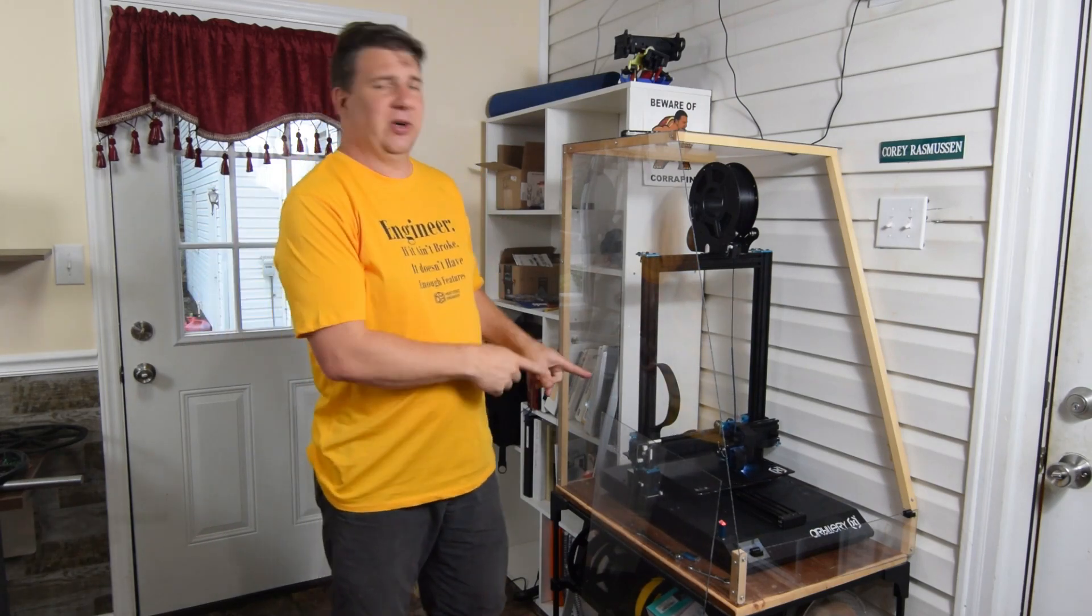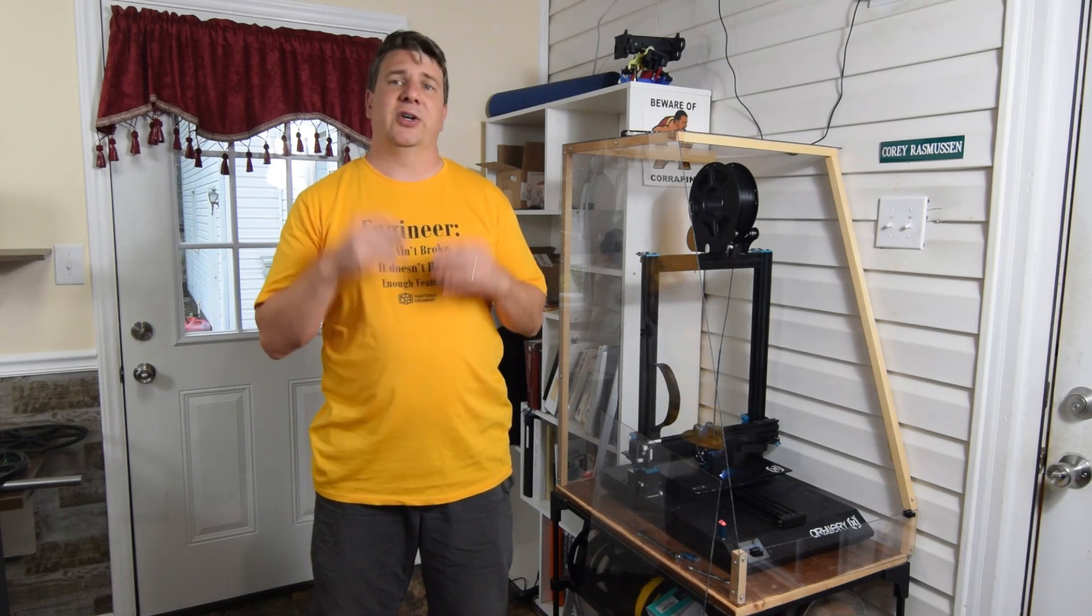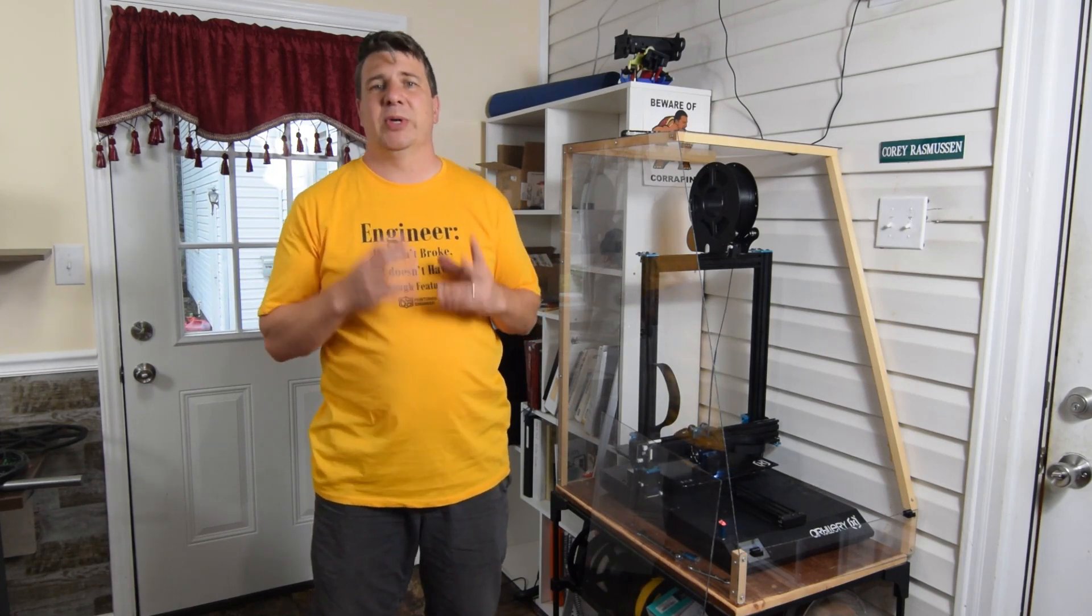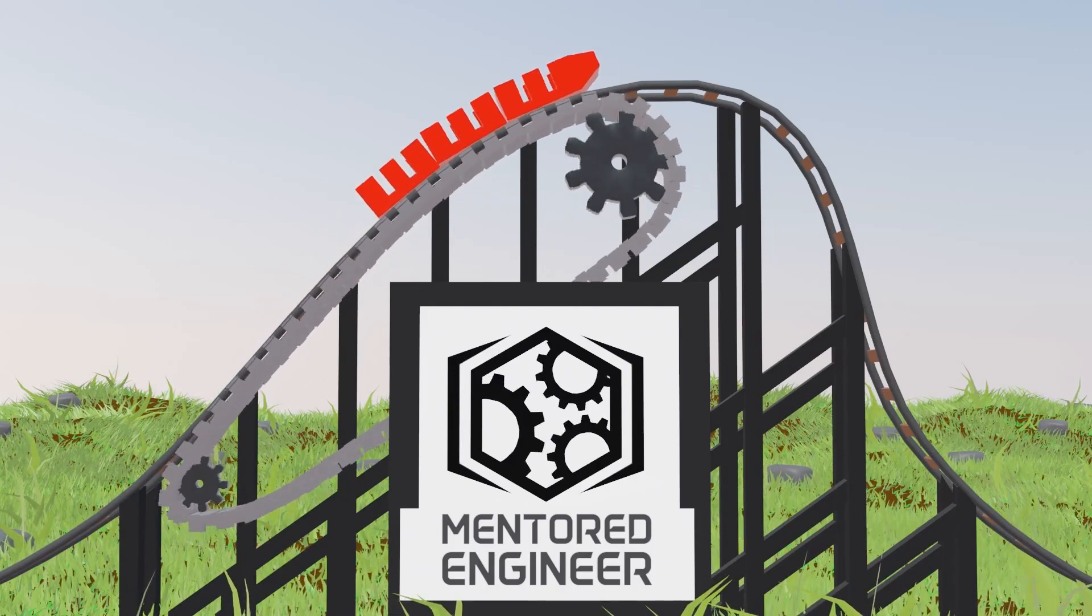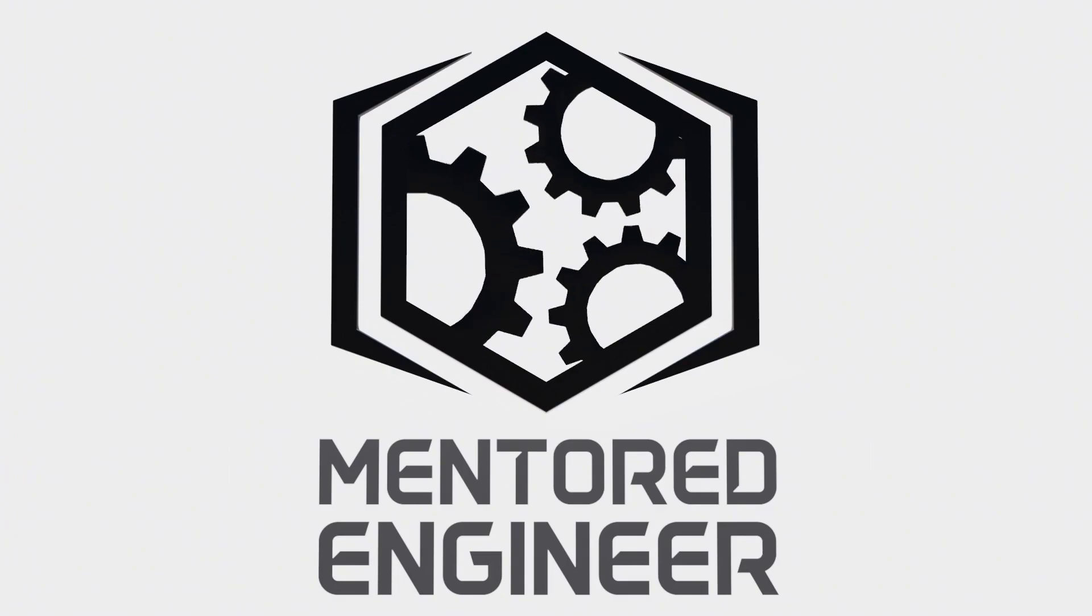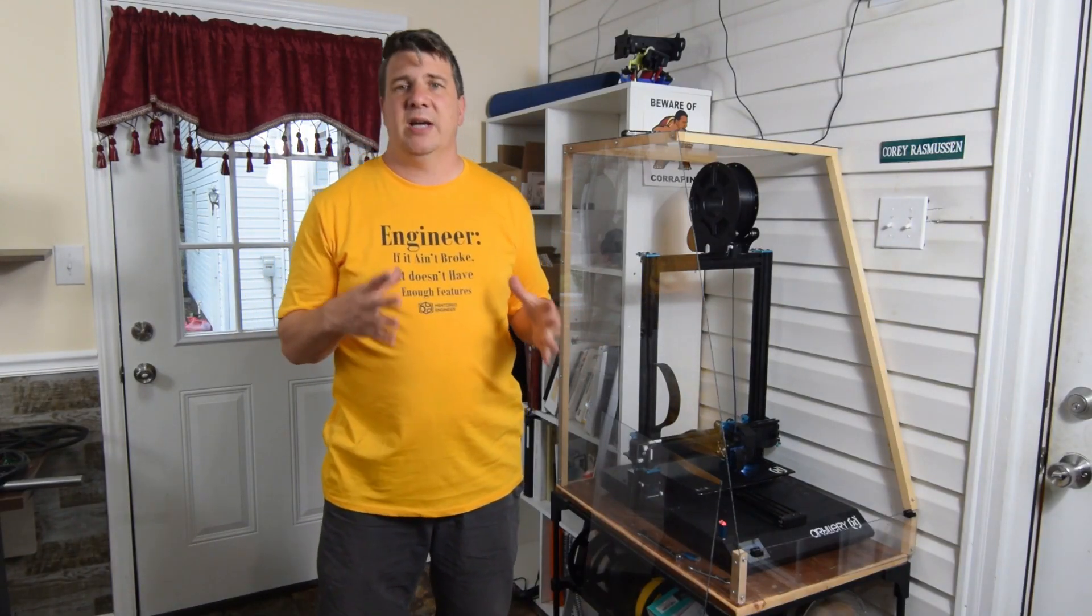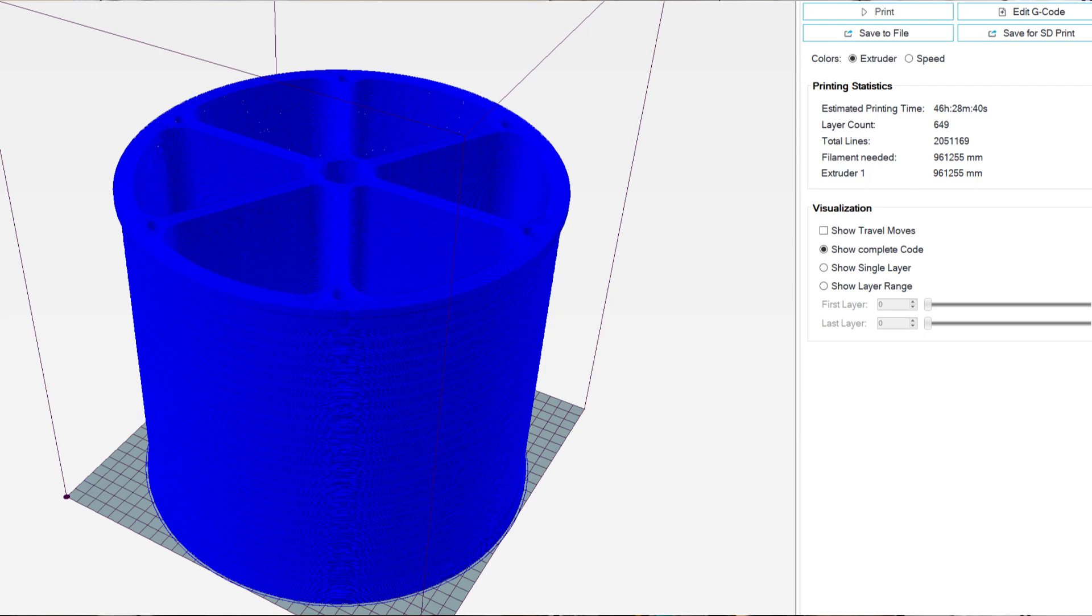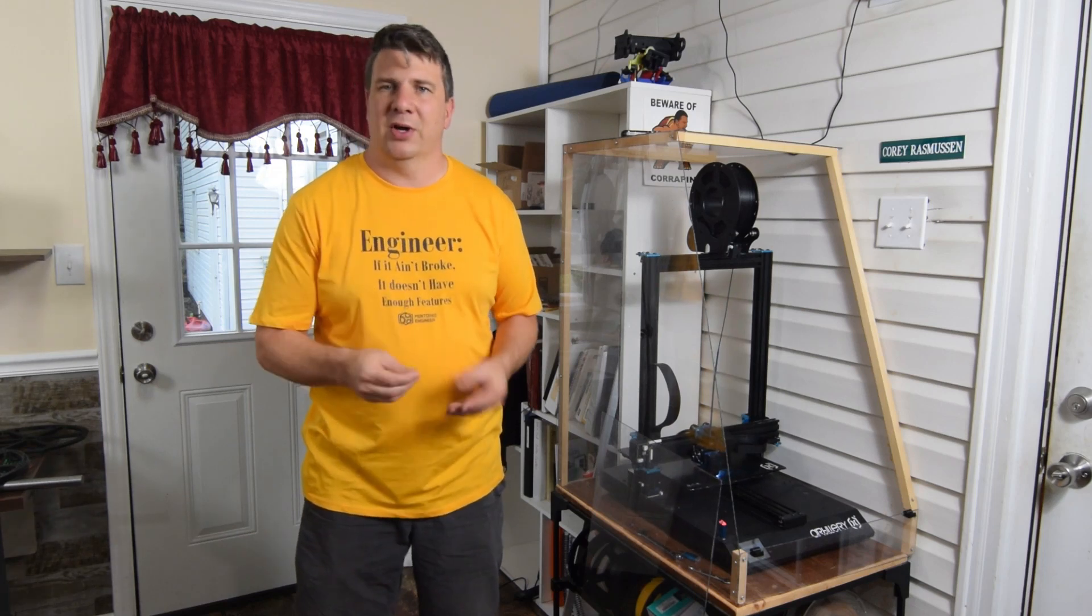So right now I have just started 3D printing our drum for Tilly's Terror, our new three inversion coaster that we're building. This drum is almost 12 inches in diameter and about a foot long, and it will simultaneously wind and unwind the rope for our launch.